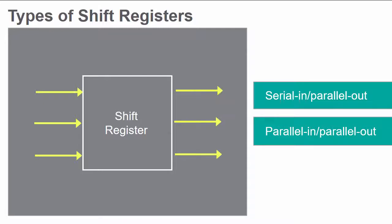Parallel-in, parallel-out shift registers receive all the bits of data in a grouping simultaneously and output all bits of data from that grouping simultaneously.